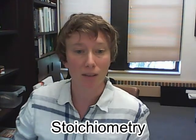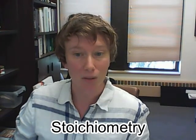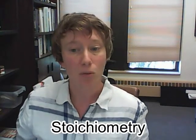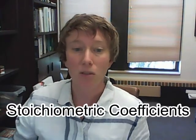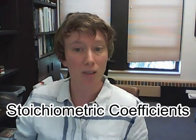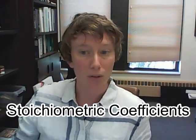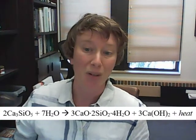You may be reminded of stoichiometry, that is the theory of proportions in a balanced chemical reaction as you look at this equation. You'll also notice the stoichiometric coefficients - these are the numbers that precede the chemical formulas in the equation. You'll also notice the forward-facing arrow indicating that the reaction is irreversible, which is a good thing for cement, and the production of heat.